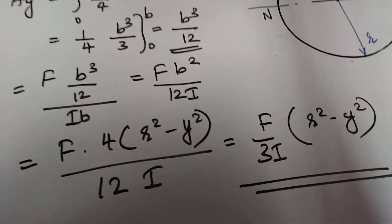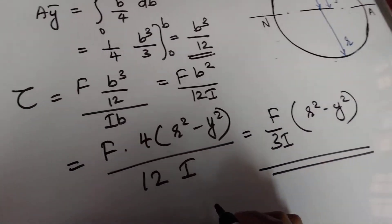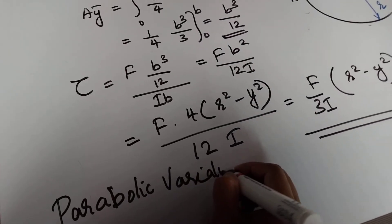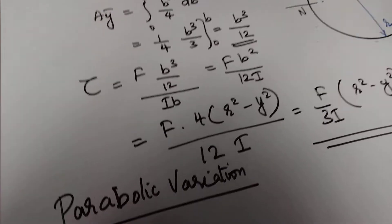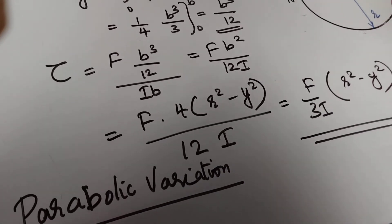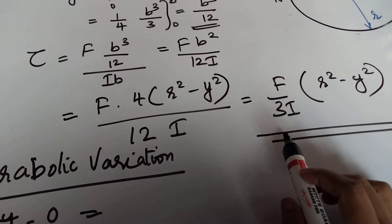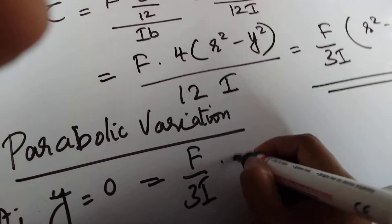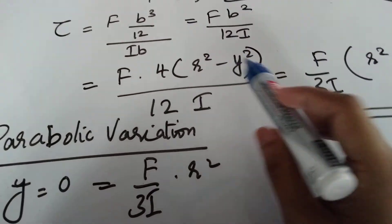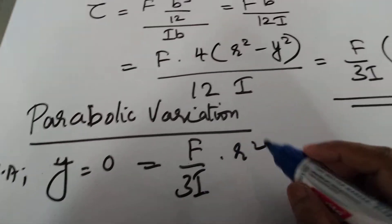That is the general expression for shear stress in a circular section: τ = F/(3I)·(r² - y²). The variation will again be parabolic. At the top and bottom where y = r, substituting gives τ = 0. At the neutral axis where y = 0, substituting gives τ = Fr²/3I.